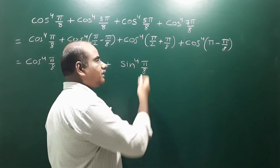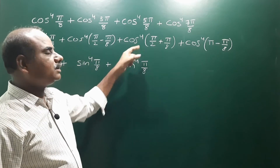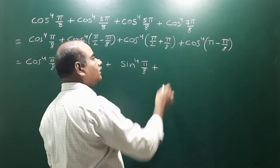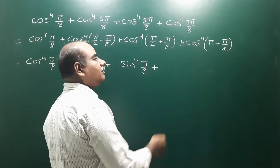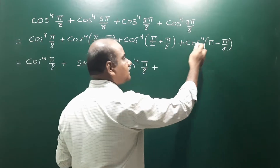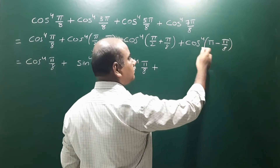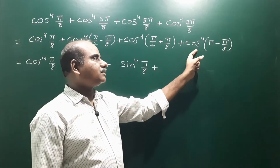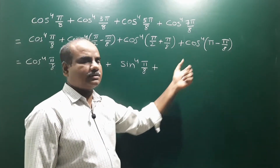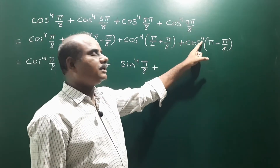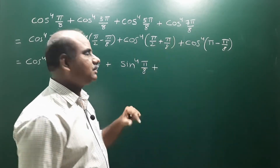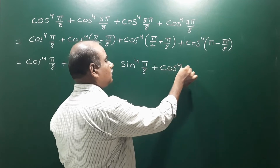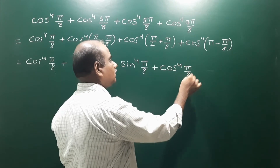...the minus sign raised to an even power becomes plus. Next, cos⁴(π - π/8): cos(180° - θ) = -cos θ, since 180° puts us in the second quadrant giving minus cos. But again, with even number power it becomes plus cos. So it is equal to cos⁴(π/8).